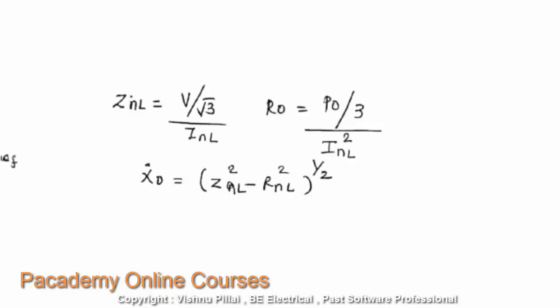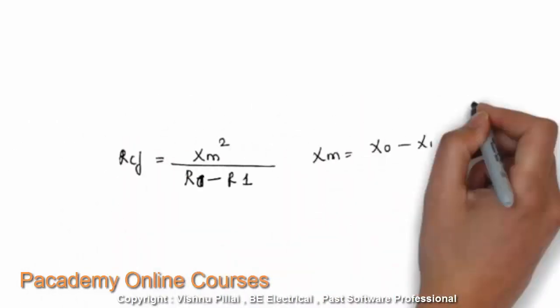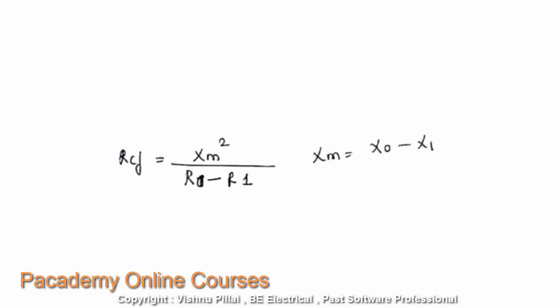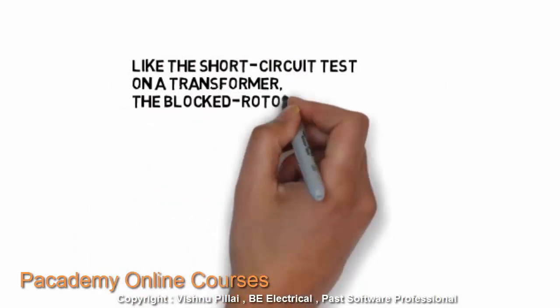The resistance R0 of the circuit is found by dividing the power per phase by INL². The reactance X0 is then found using R0 and the impedance Z0. The core loss and friction component RCF — which accounts for the rotor circuit — can be found from the formula XM² / (R0 − R1). In this way, all the parameters for the no load equivalent circuit can be determined.